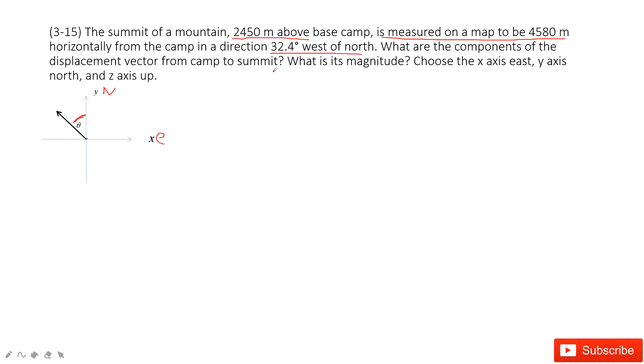And then it asks you to find the displacement vector from the camp to the summit. So this is the initial position, and then this is the summit of the mountain. And the summit of the mountain has the Z-component.